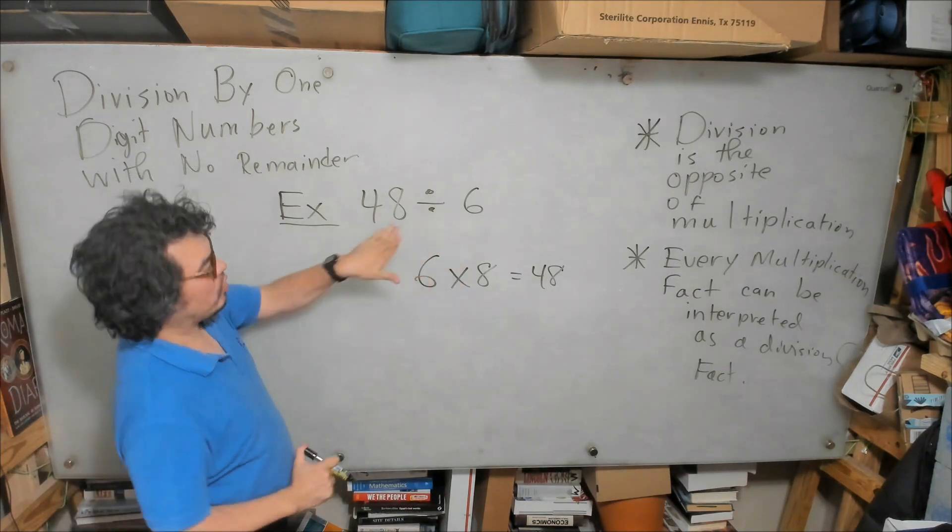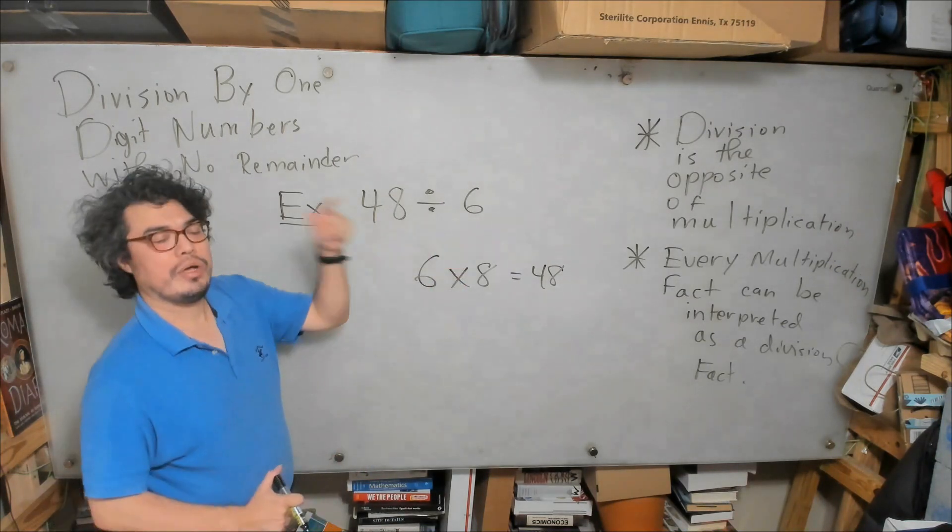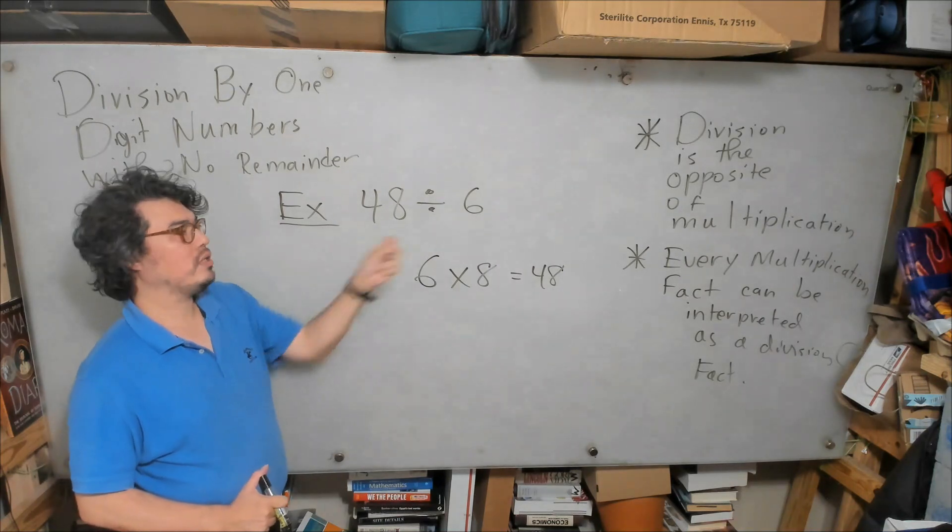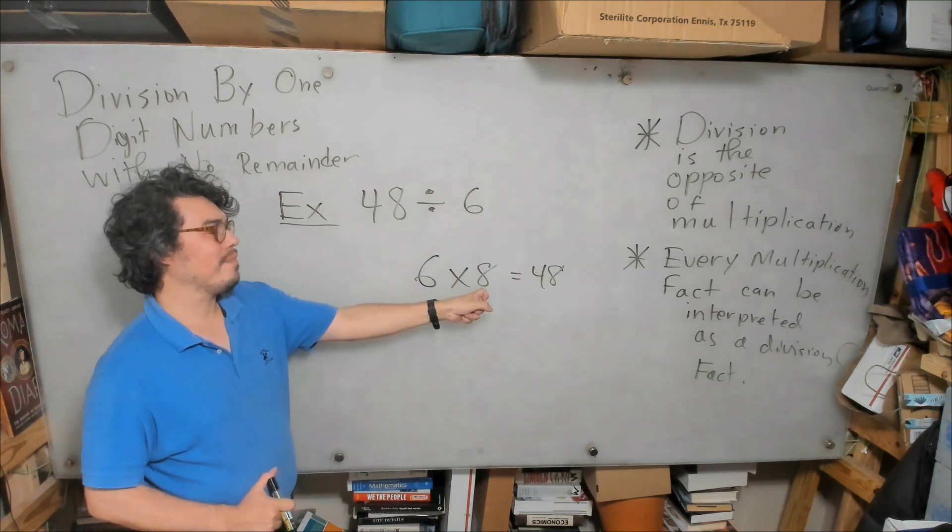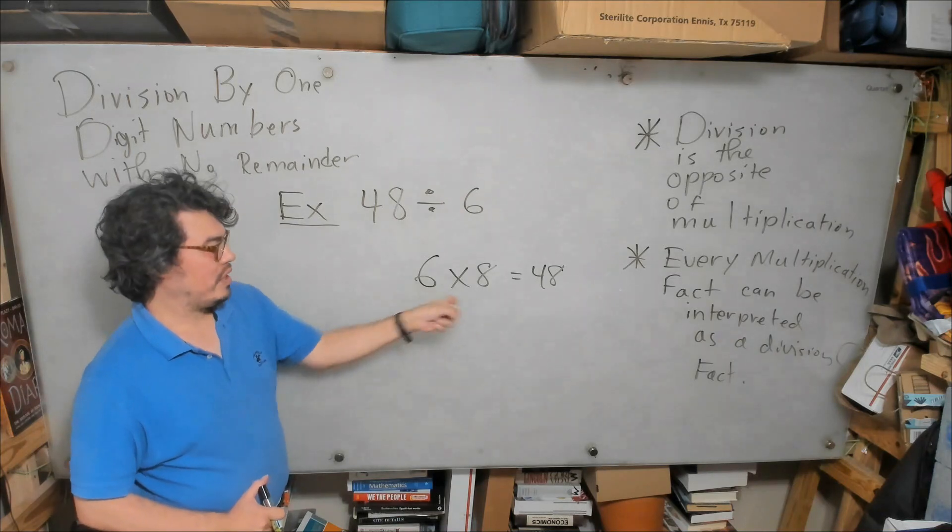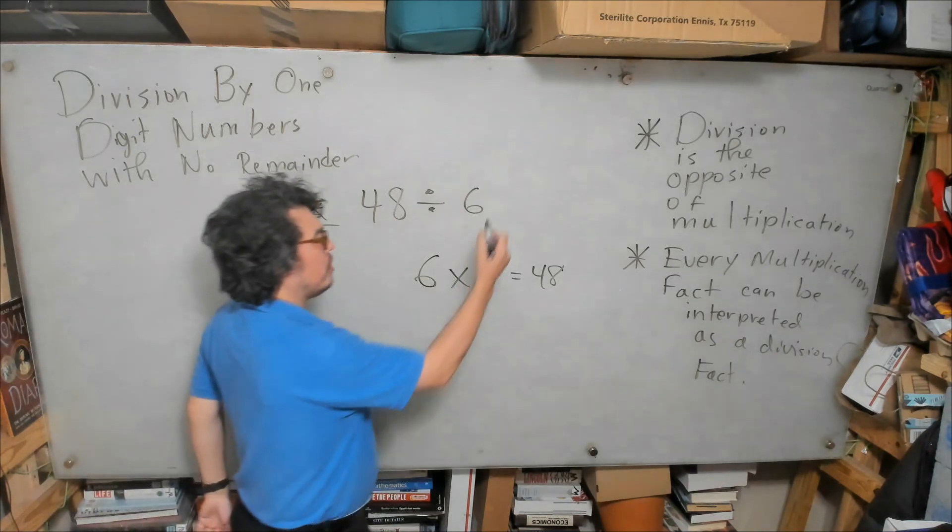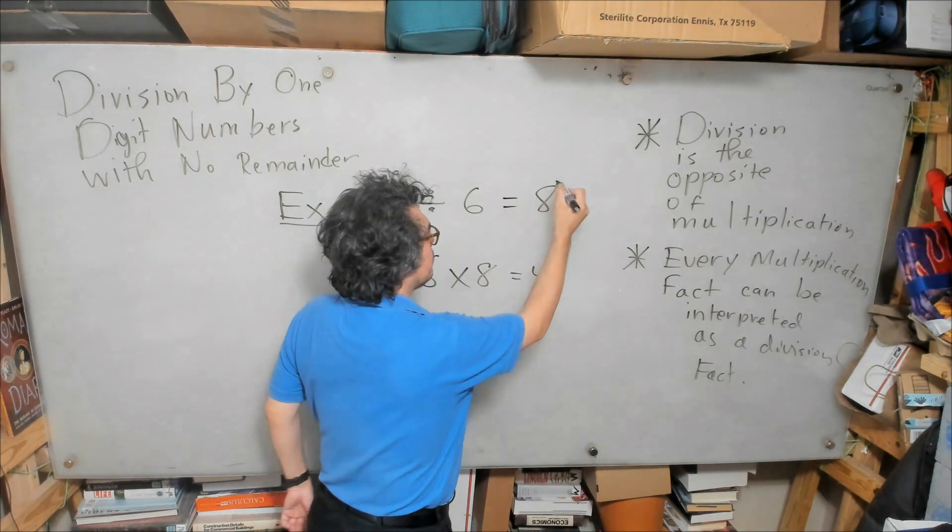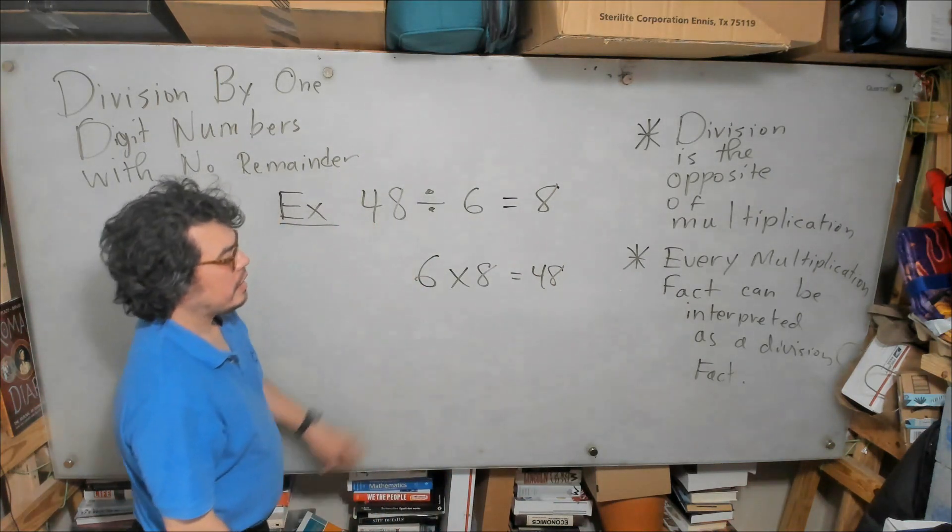So if we're looking for 48 divided by 6, we asked ourselves in our brain what number times 6 gives me 48? And aha, 8 does. We have this fact here, so this is equal to 8. Now of course, if you know this multiple, basically this example is done.